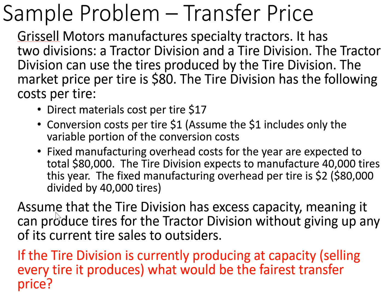The last question: if the tire division is currently producing at capacity — meaning it's selling every tire it produces — what would be the fairest transfer price? If it's already selling everything it's producing, the absolute fairest price would be market price, because that's what they can get elsewhere.